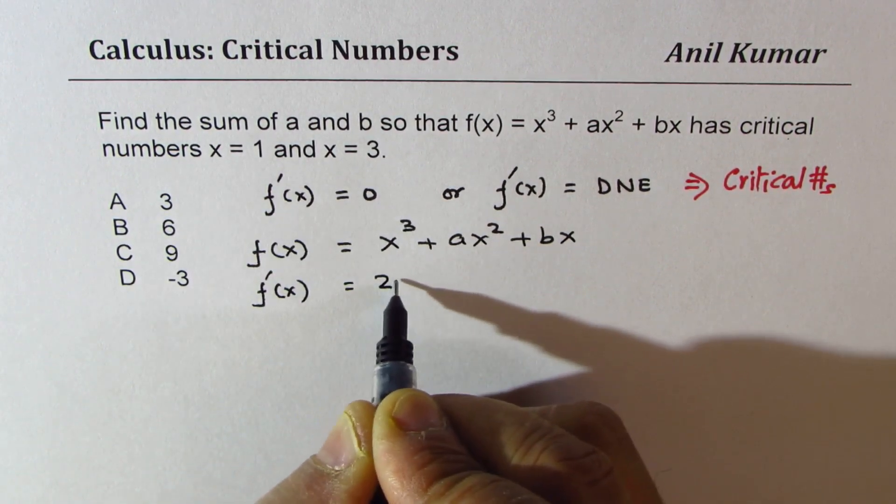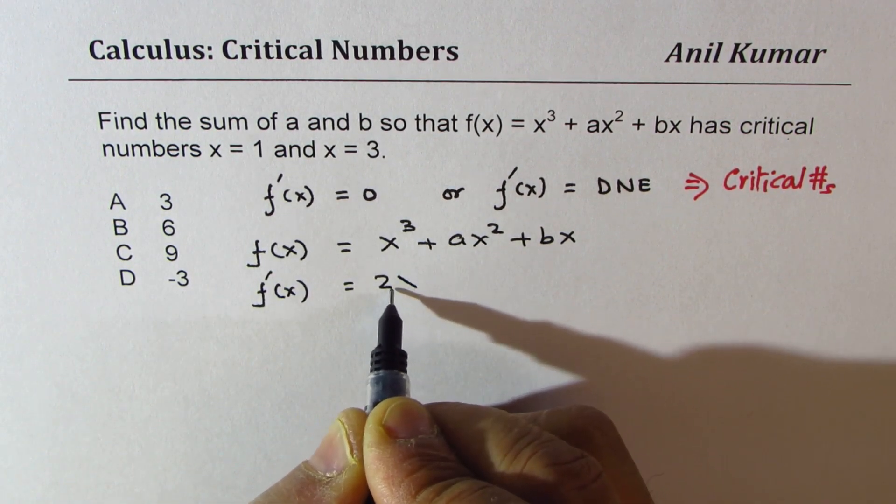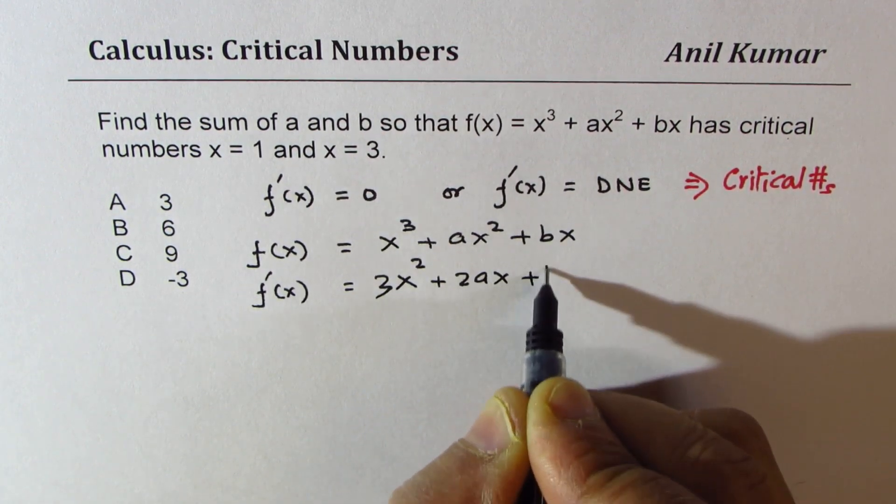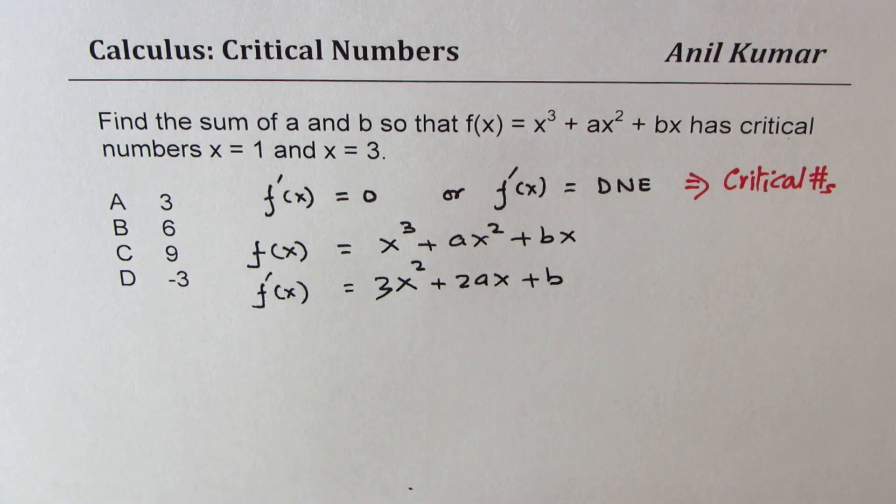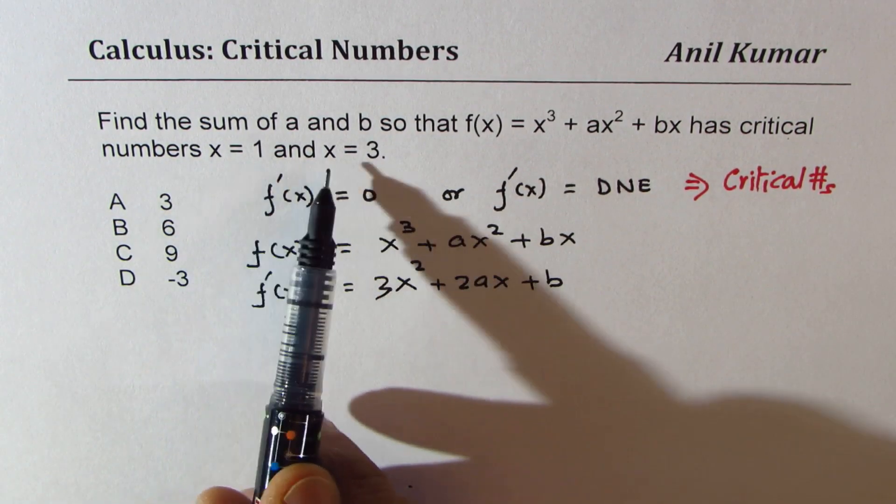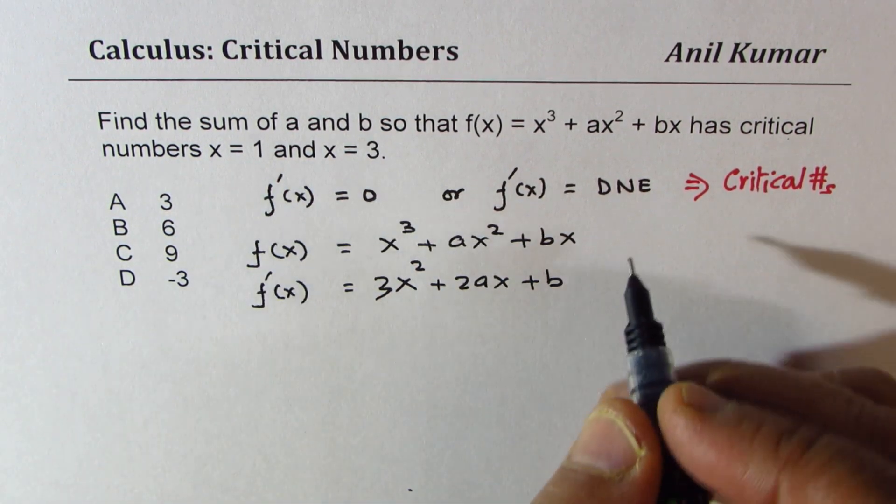Now we are given that the critical numbers are x = 1 and x = 3. So that means that for x = 1 and x = 3, the derivative should be equal to 0, right?